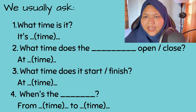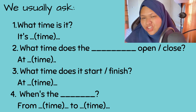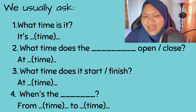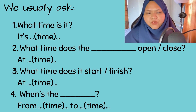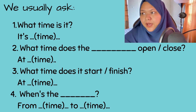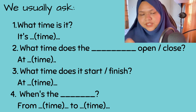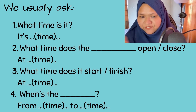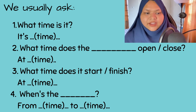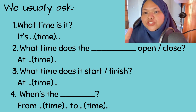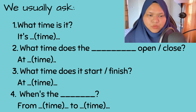Remember, you can only use 'o'clock' for exact time — not when there are minutes involved. Question number two: you use this when you want to know what time a place opens or closes. For example, 'What time does the café open?' The answer usually starts with 'At...' followed by the time, such as 'At two o'clock.'